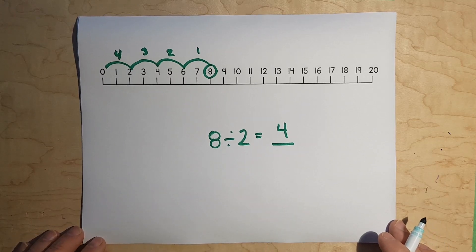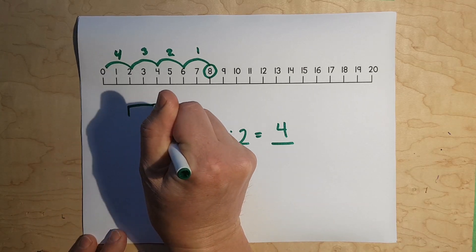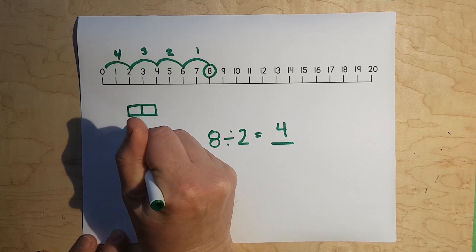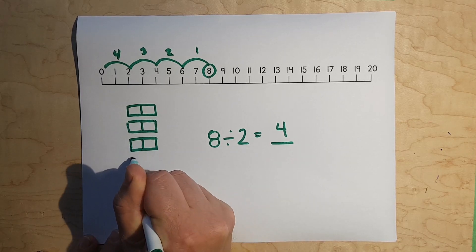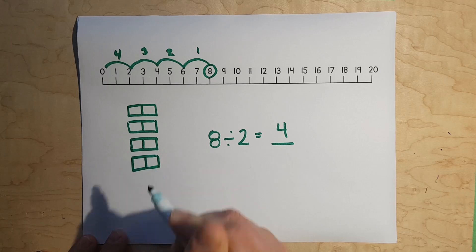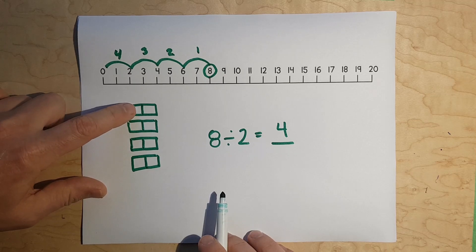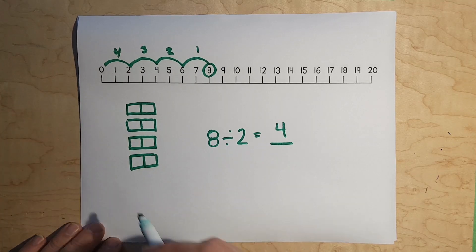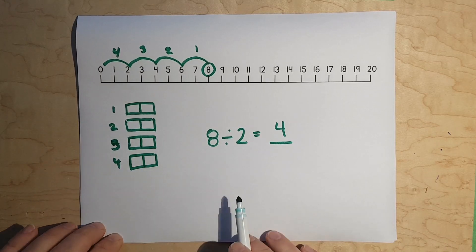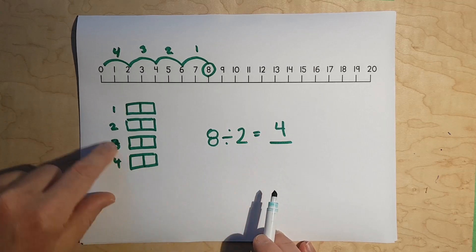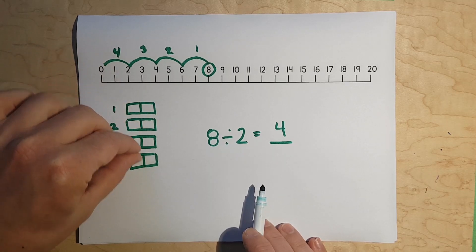Something else I could show you here is 8 divided by 2. I could do 1 group of 2, 1 group of 2, 1 group of 2, 1 group of 2. Do you see how there's 8? They're in groups of 2 — 2, 2, 2, 2. And if you count them, there's 1, 2, 3, 4 groups. So, there's 4 groups of 2. 4 groups of 2 equals 8. If you take 8 and divide by 2, you have 4.